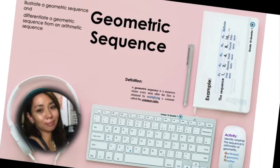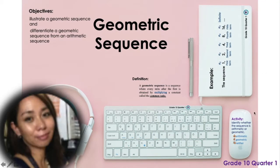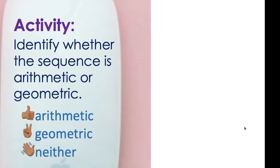You are now ready to try our activity: identify whether the sequence is arithmetic or geometric. Thumbs up if the given sequence is arithmetic, peace sign if it is geometric, and wave your hand if it is neither arithmetic nor geometric. I will give you 30 seconds to observe the sequence and show your answer.